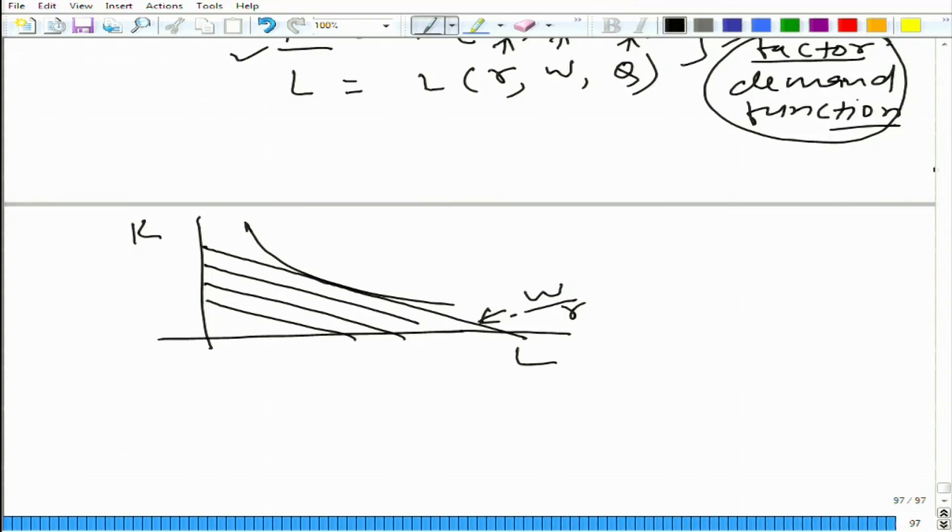So, if let's say W and R cannot be controlled. The assumption is that the firm is not able to control W and R; they take W and R as given. These are exogenous variables beyond the control of the firm.